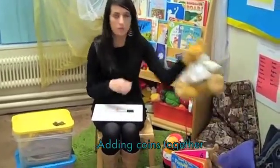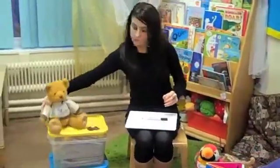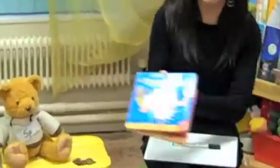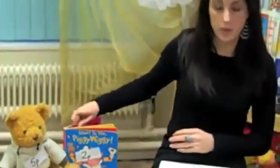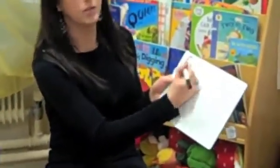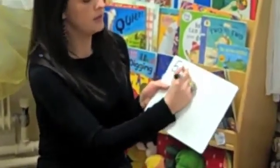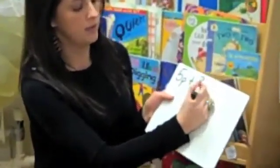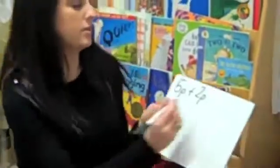I'm going to firstly choose my teddy bear which is 5p and book which is 2p. So on my whiteboard I'm going to write 5p because that's how much the teddy bear costs, plus 2p because that's how much the book costs equals.